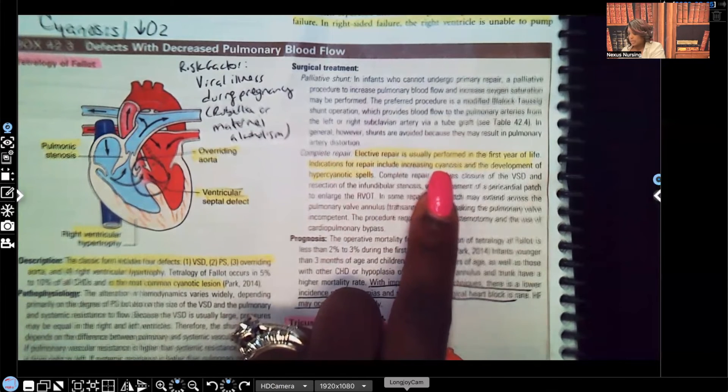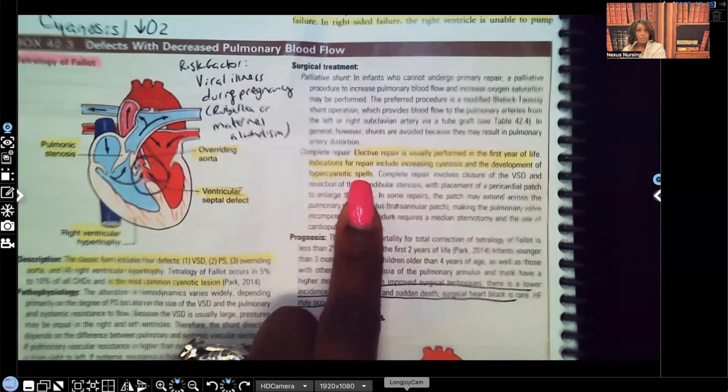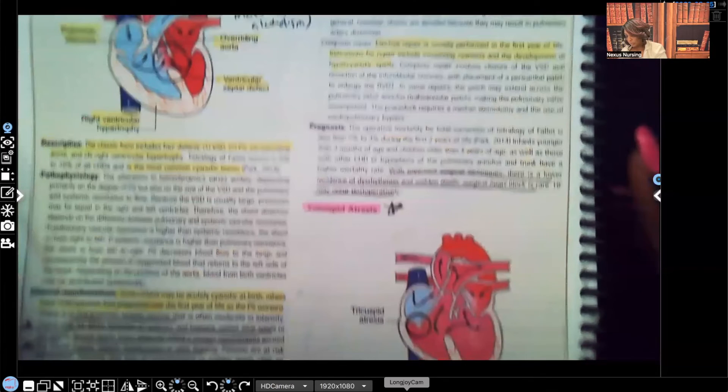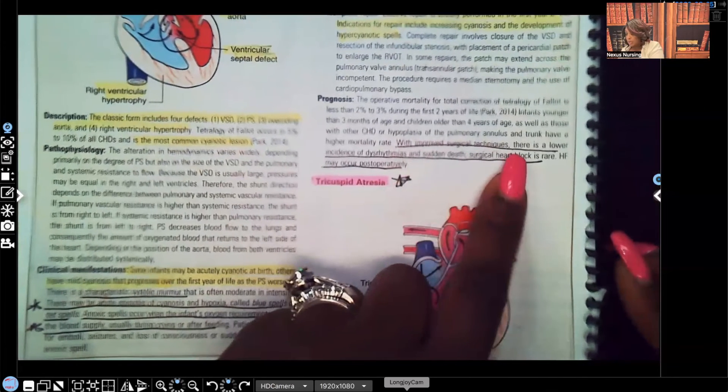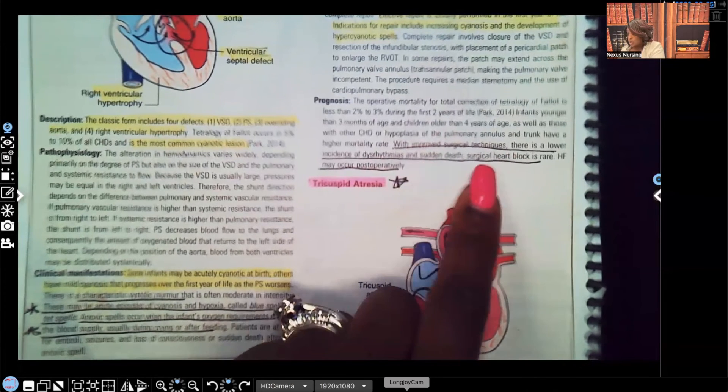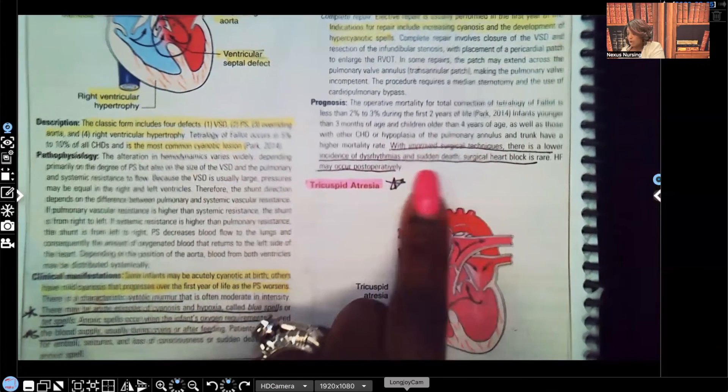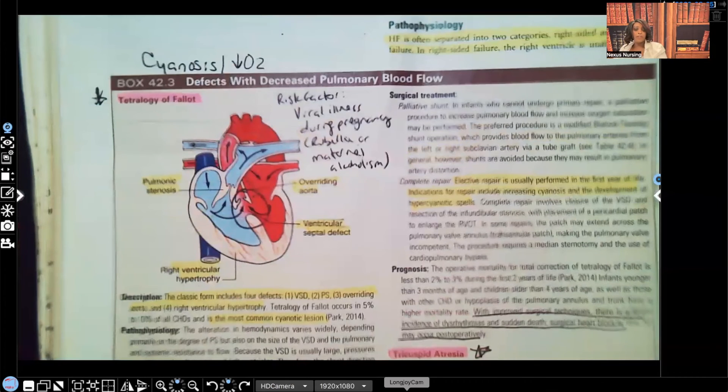Those tet spells, those blue spells. Prognosis with improved surgical technique: There's lower incidence of dysrhythmias and sudden death. Surgical heart block is rare and heart failure may occur postoperatively. There goes your Tetralogy of Fallot.